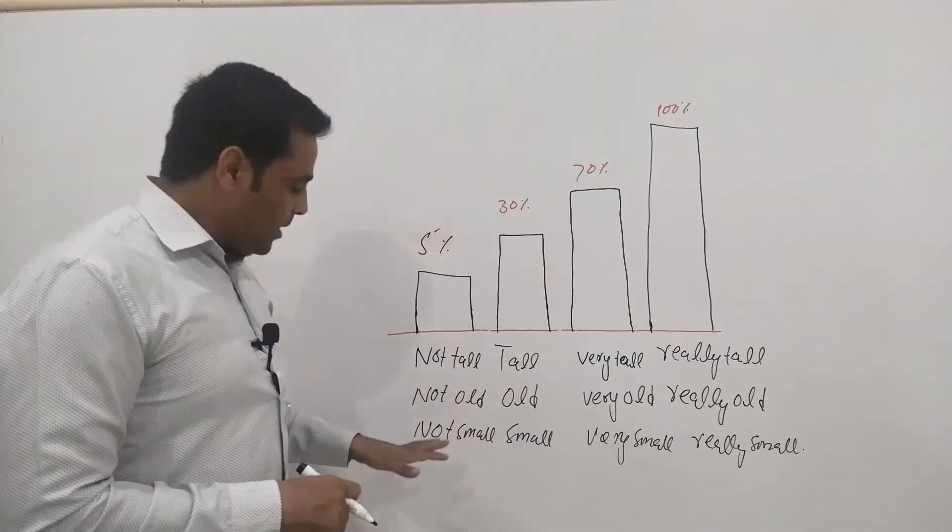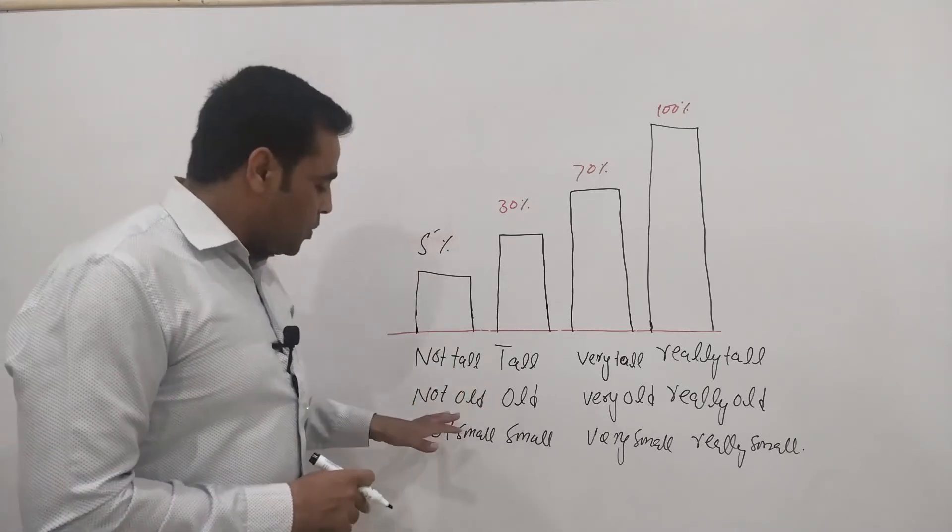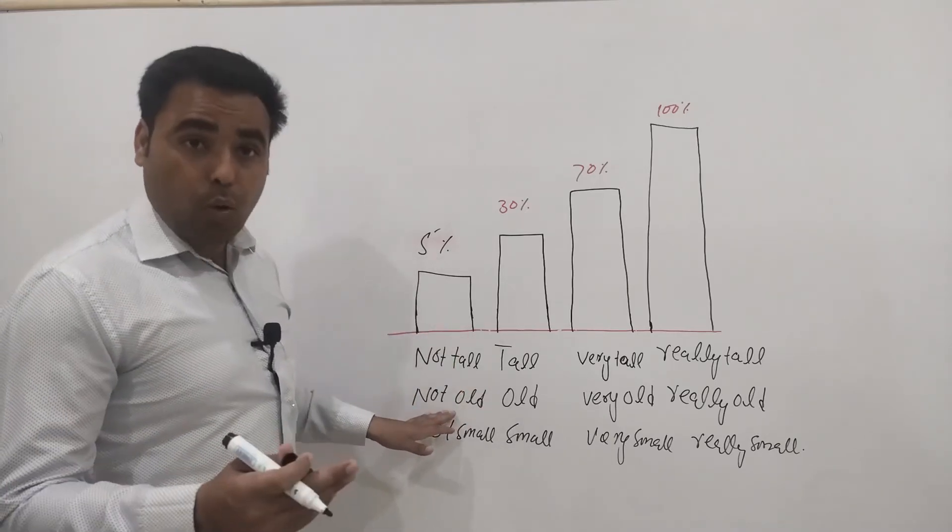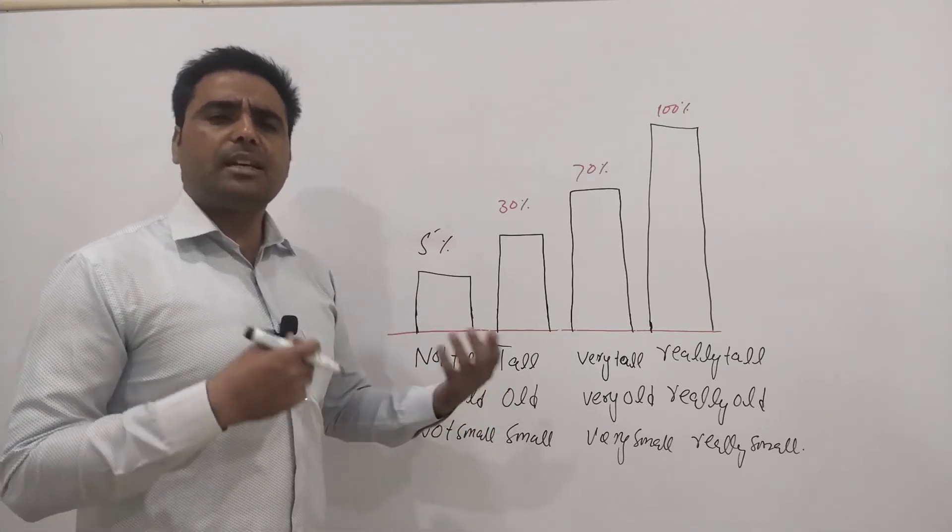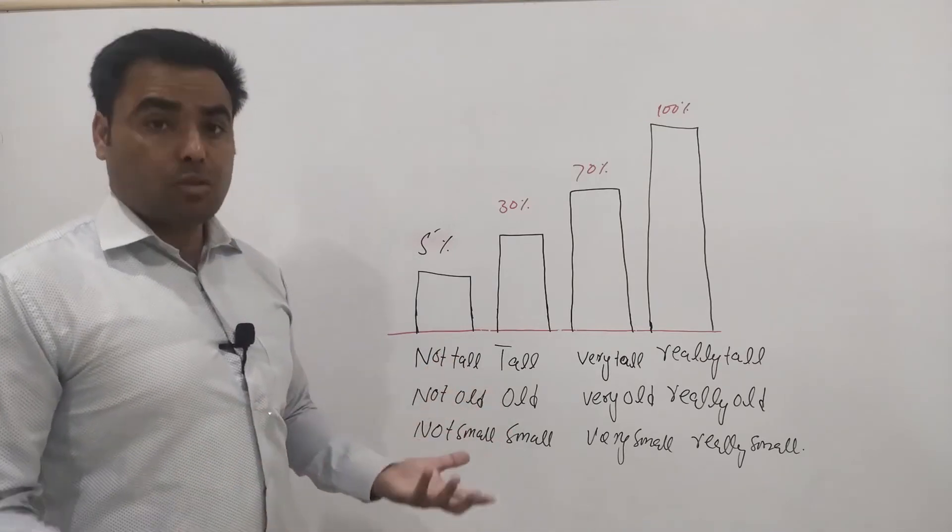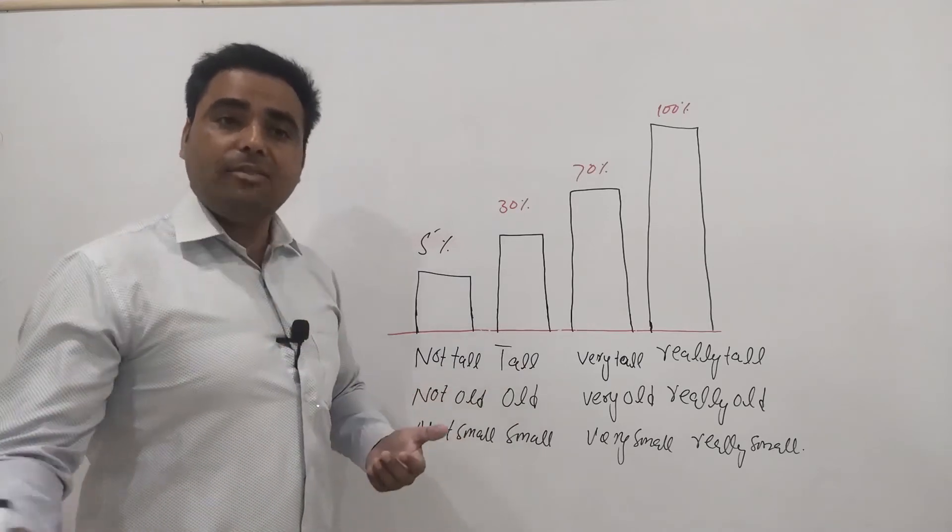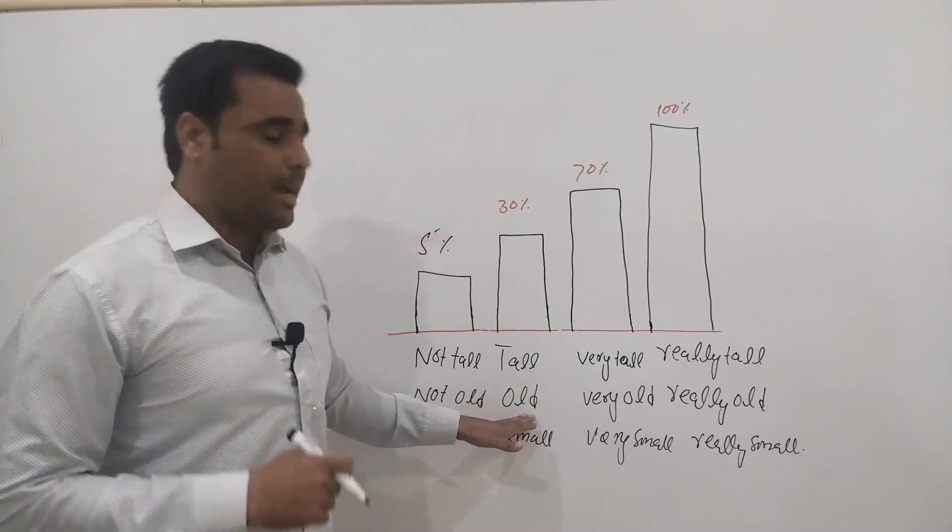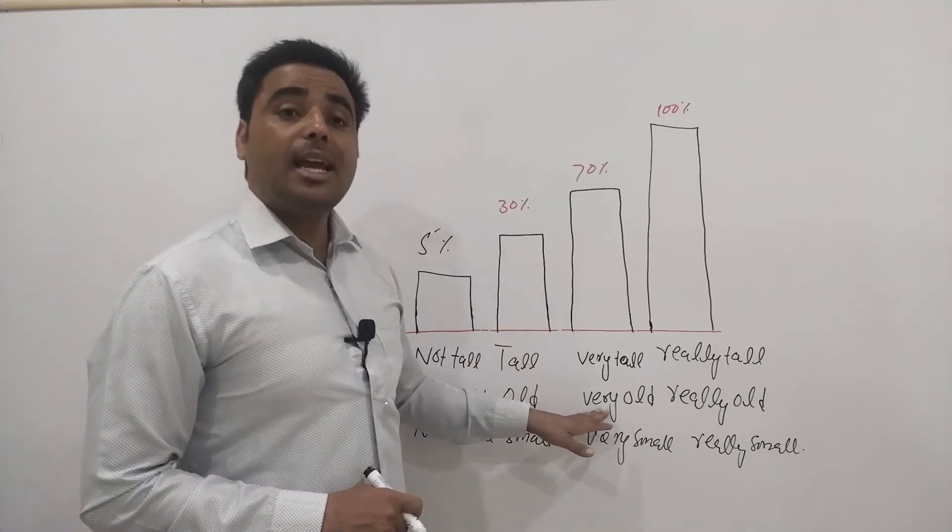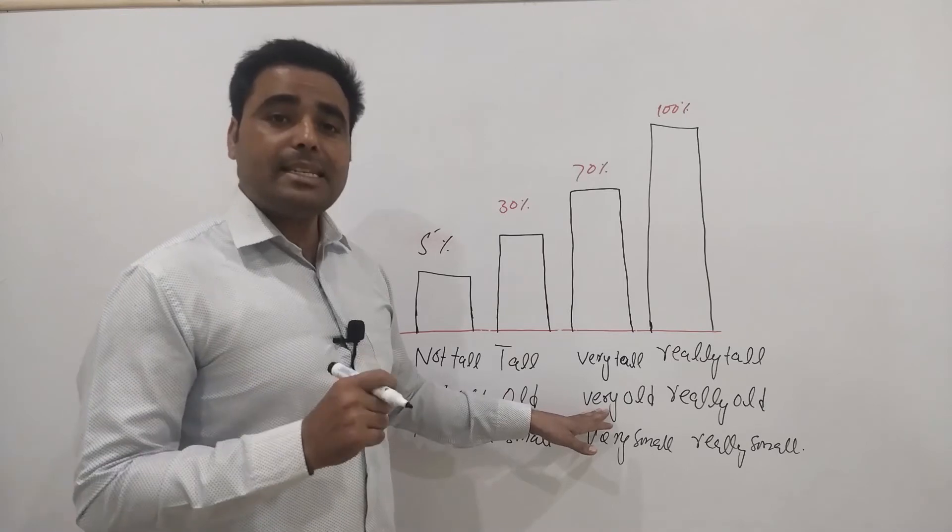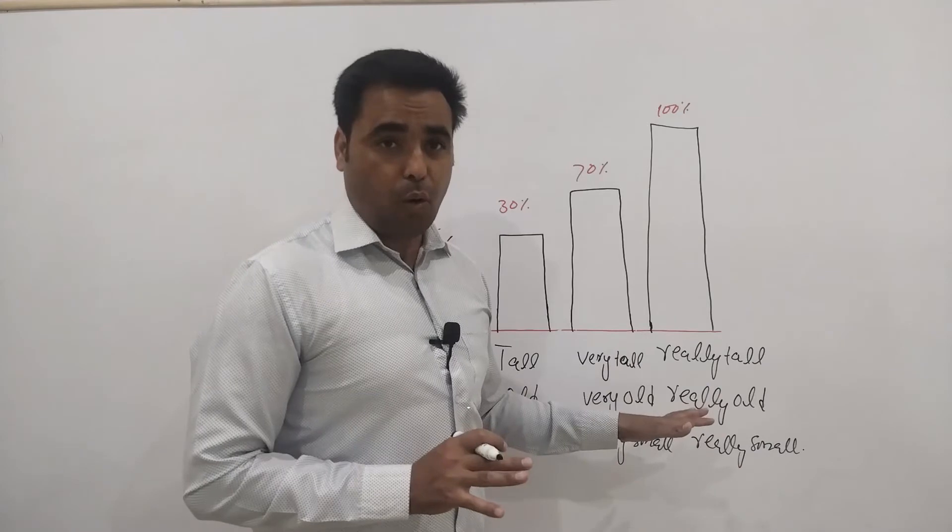The next adjective we have, for example, let's talk about old. Something that is from the past, we will say it's not old. You can say it's old. Then you can say it is very old, it is very old. And the oldest thing, it's really old. Really old.